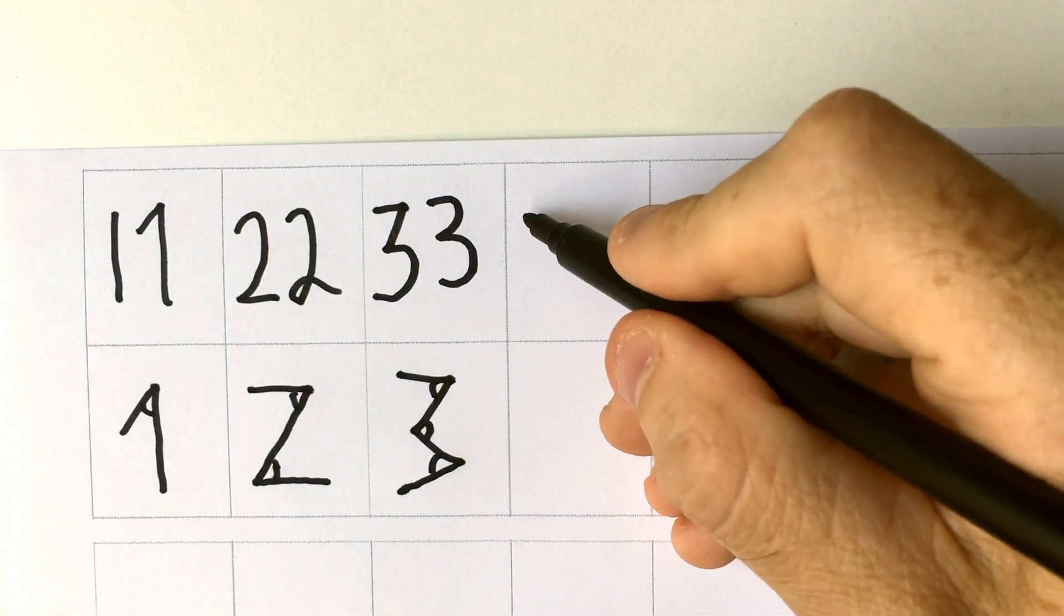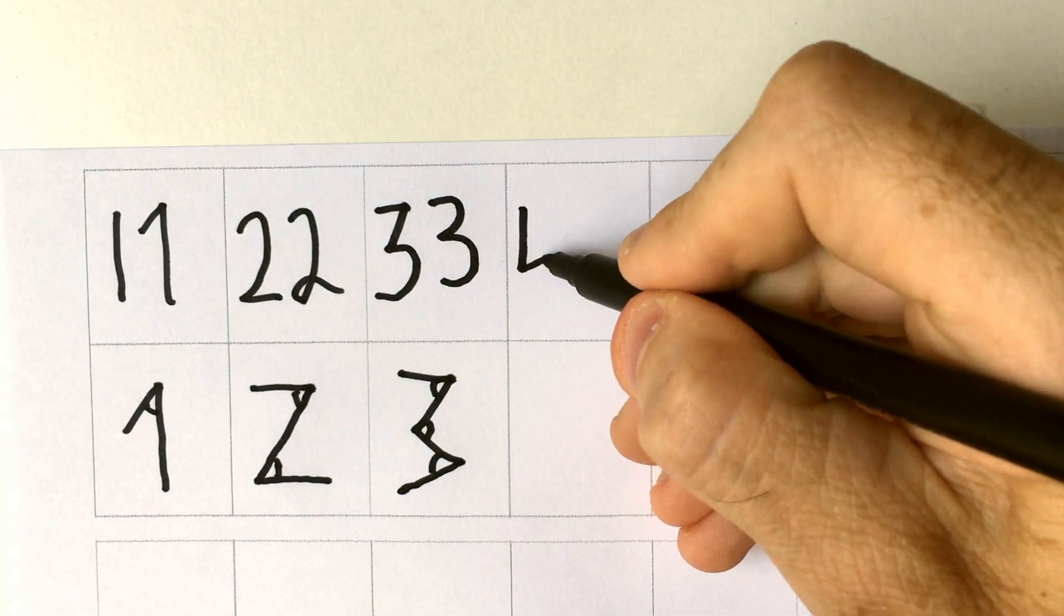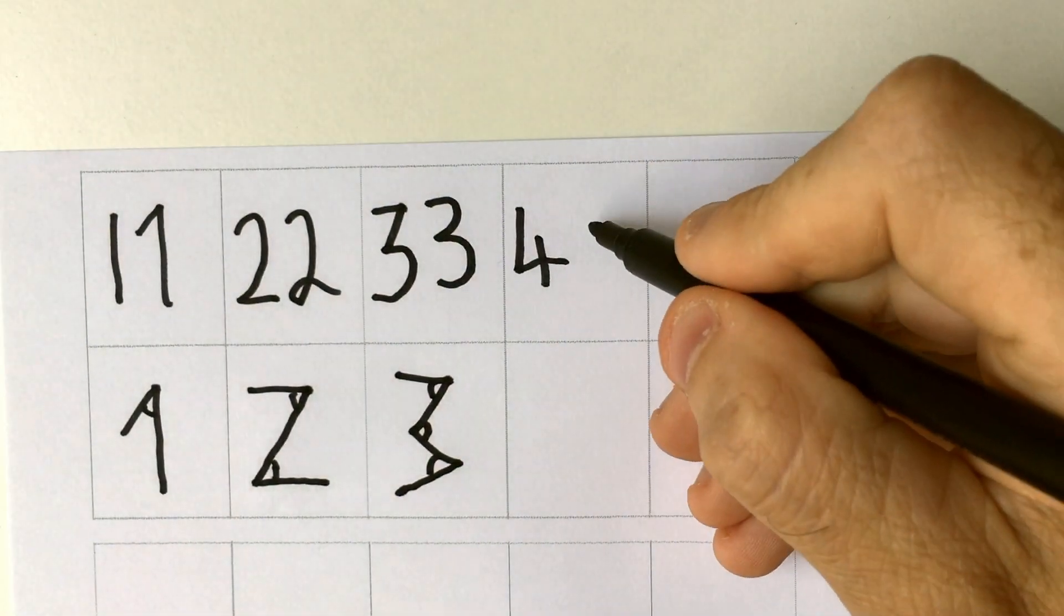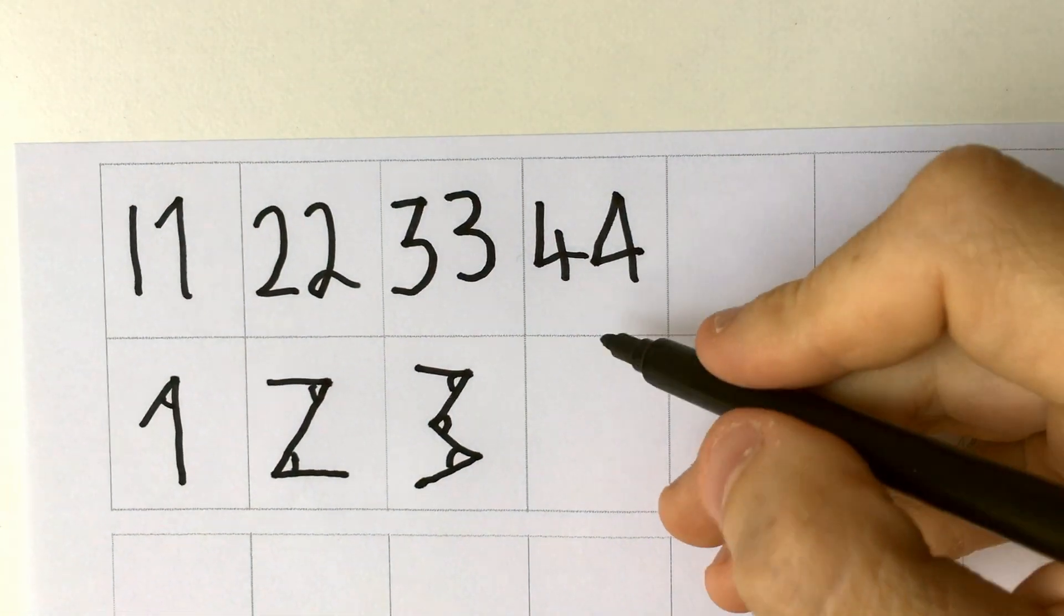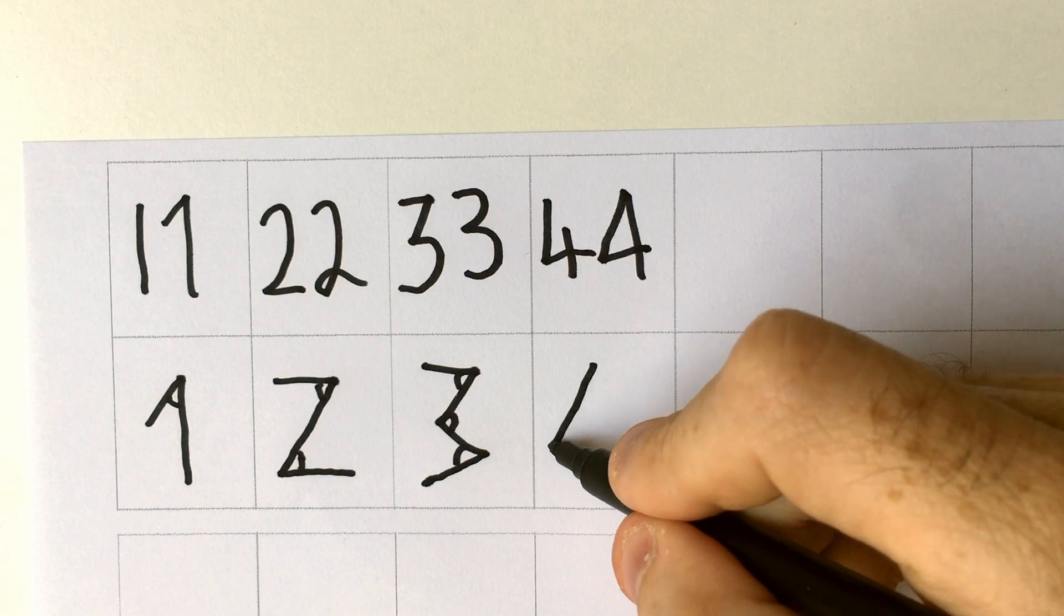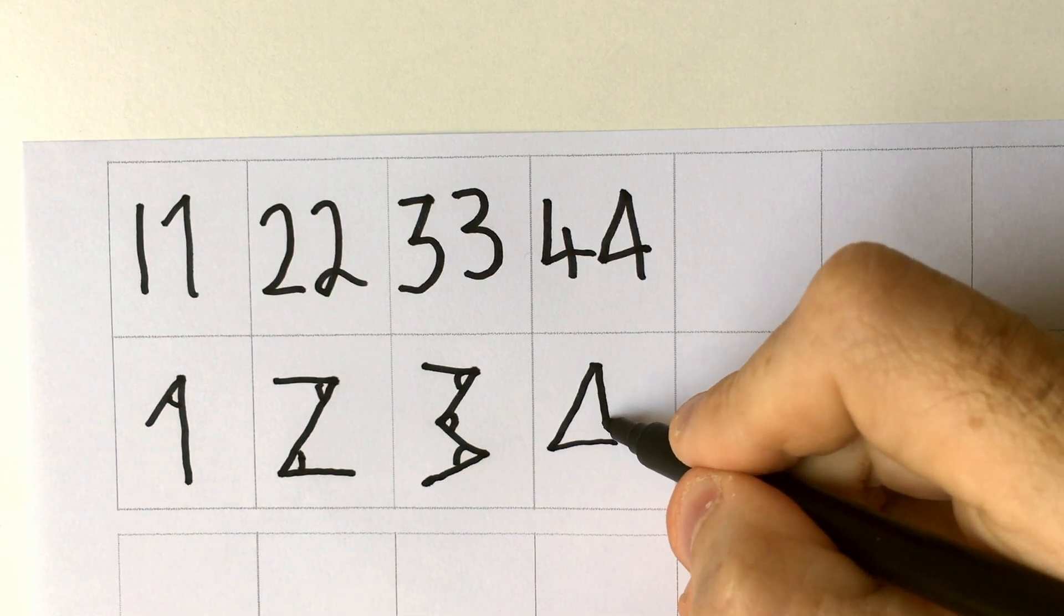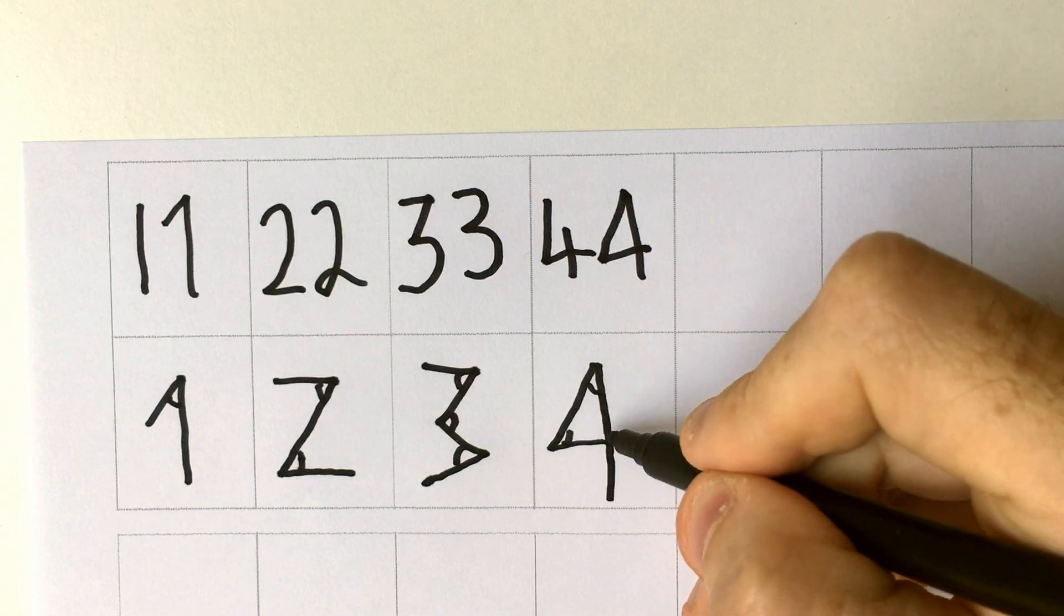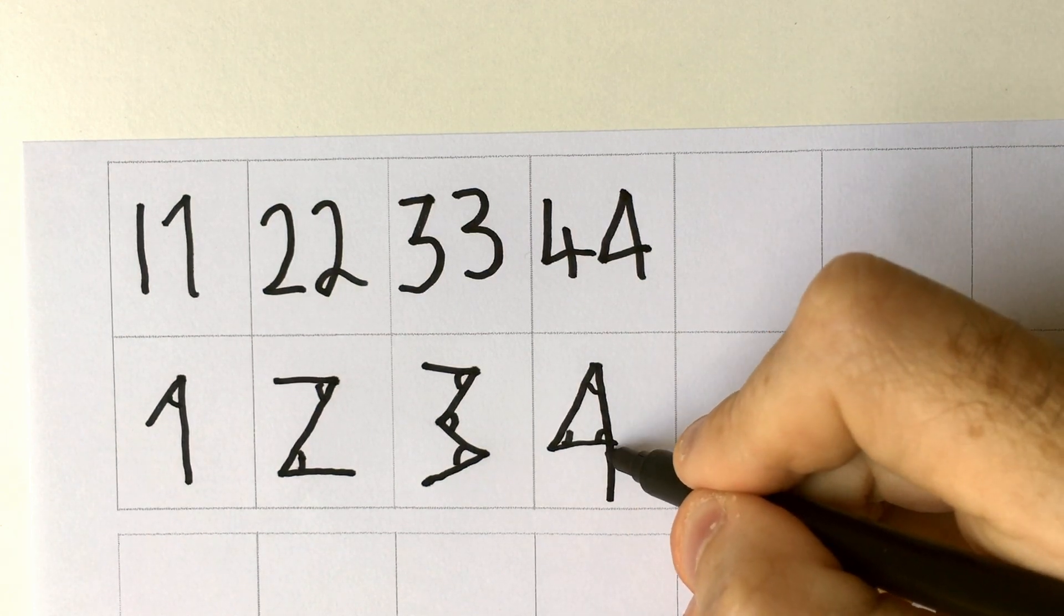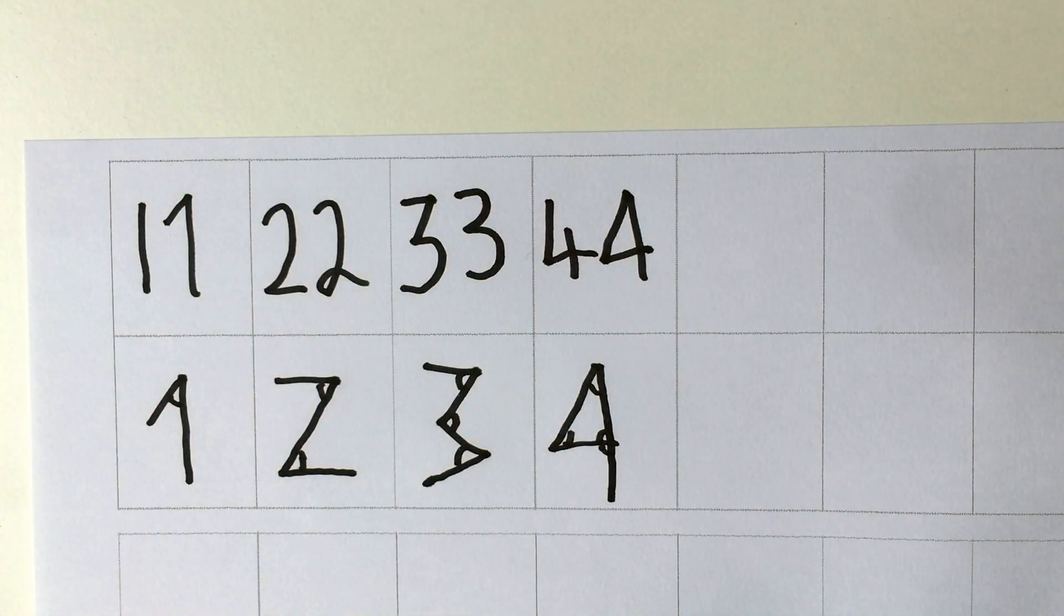Number four. Again, depending where you're from, I've seen fours like this, but also I've seen fours like this. One corner, two corners, three corners, and four corners. There you go.